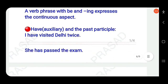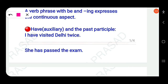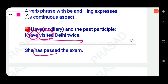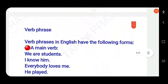An auxiliary verb 'have/has' + past participle (V3) expresses the present perfect; 'had' + V3 expresses the past perfect. For example, 'I have visited Delhi twice' — verb phrase is 'have visited'. 'She has passed the exam' — verb phrase is 'has passed'. These are groups of words that function as the verb in the sentence.